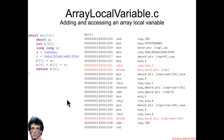This is the assembly that gets generated, and we've got three new assembly instructions: IMUL, which is signed multiplication; MOVSX, which is move with sign extension; and MOVZX, which is move with zero extension.